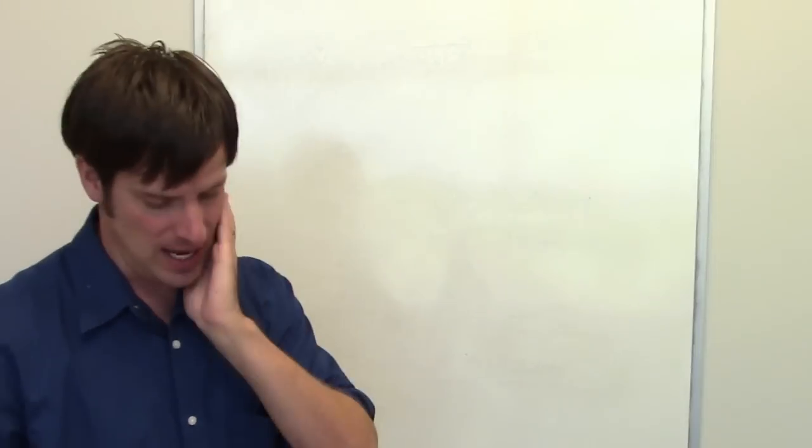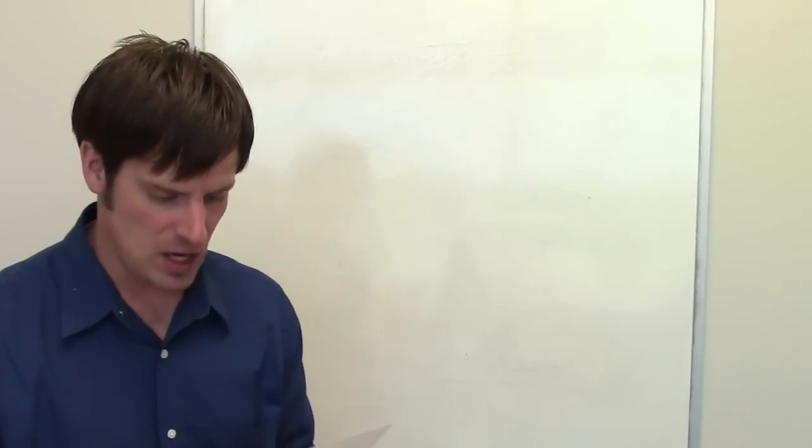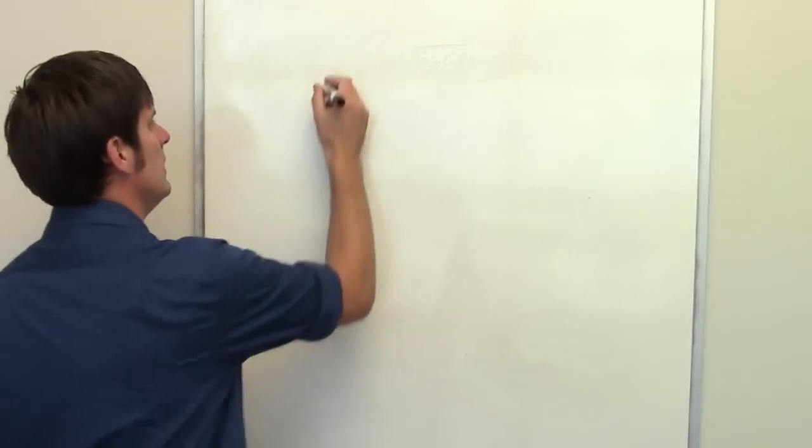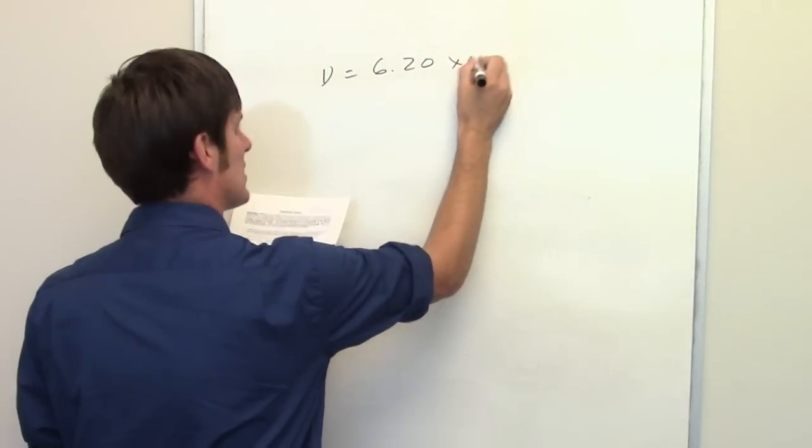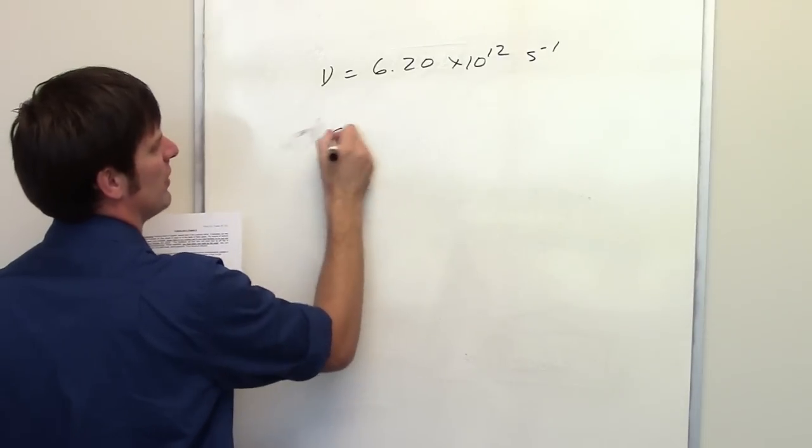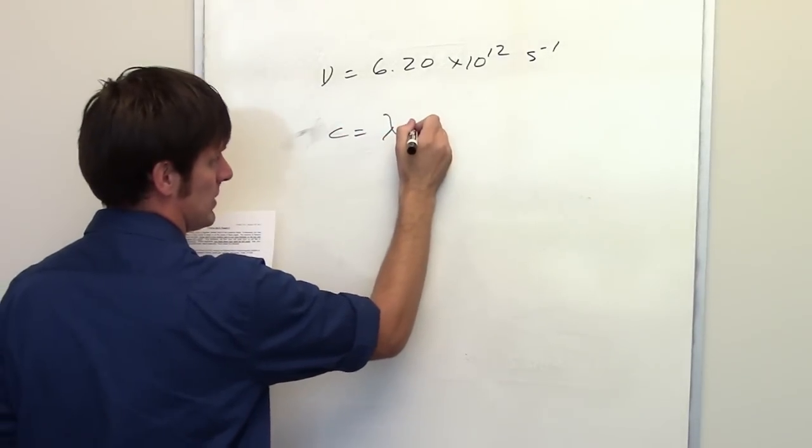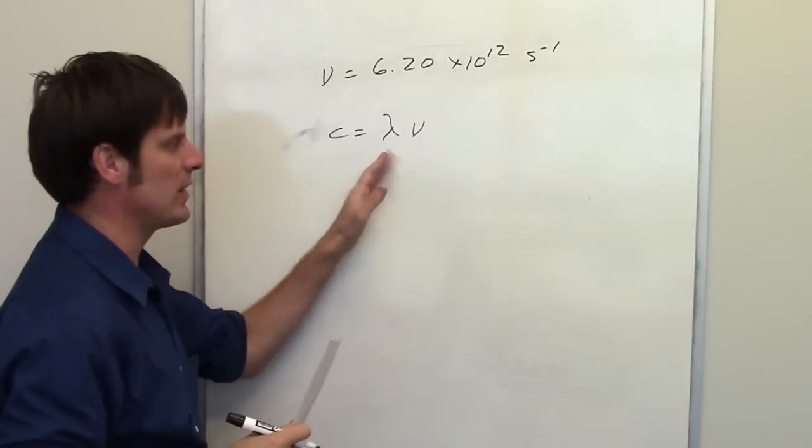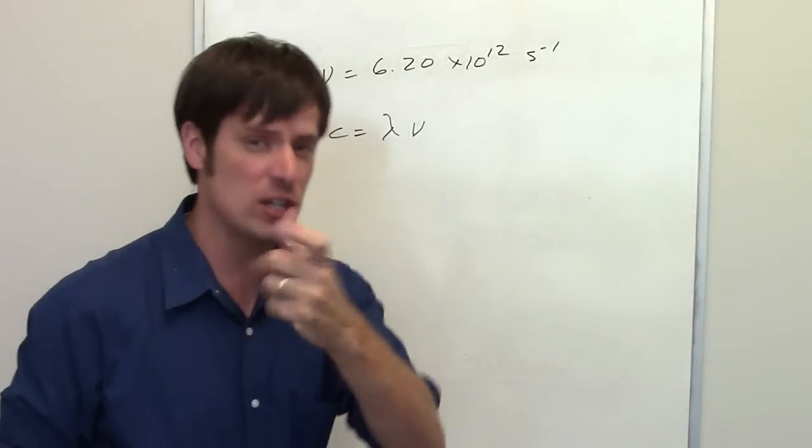In the second problem in this set, we're asked what the wavelength is of a radiation that has a frequency of 6.2 times 10 to the 12th inverse seconds. Once again, we know that the speed of light is equal to wavelength times frequency. As we just did, we were given a wavelength and asked to determine the frequency using algebra.